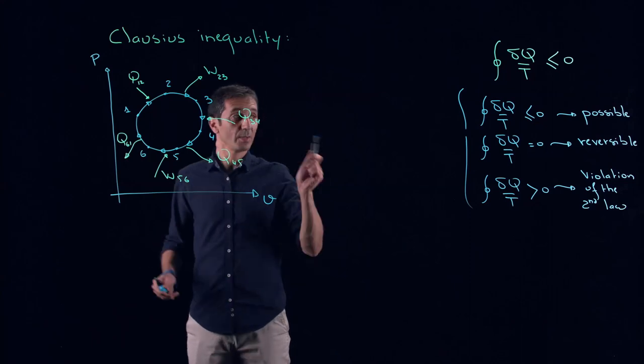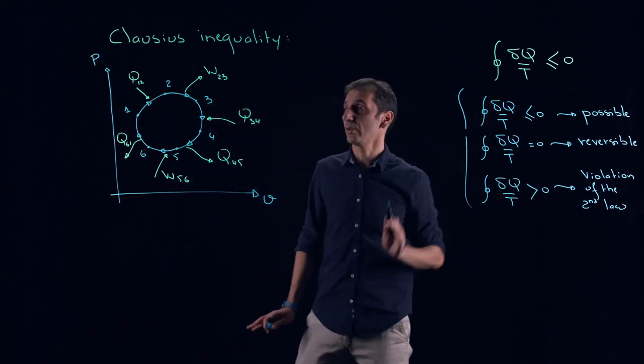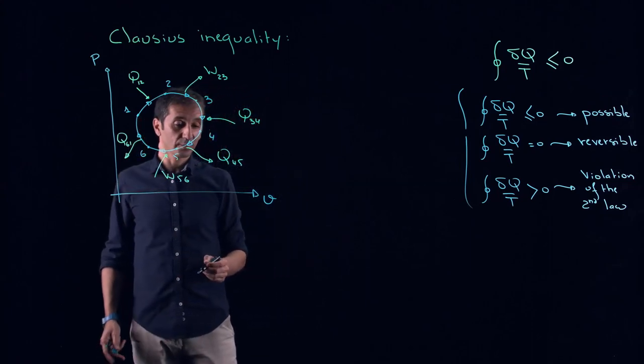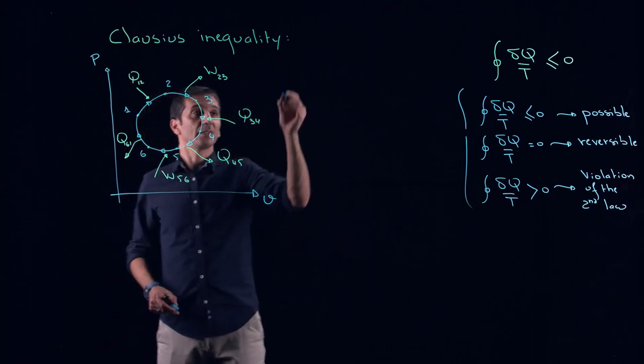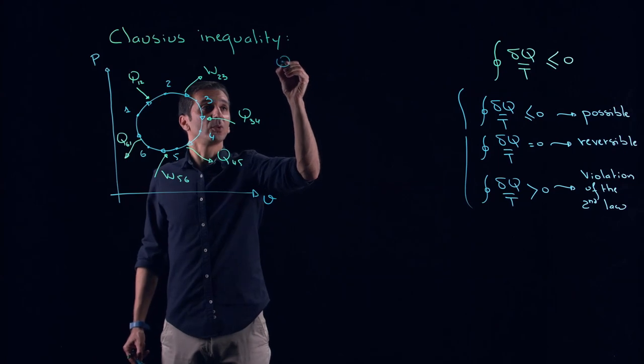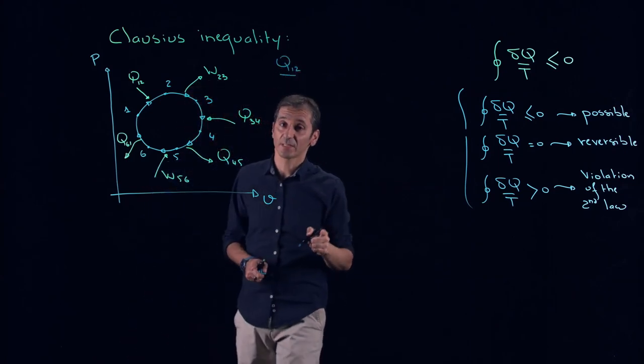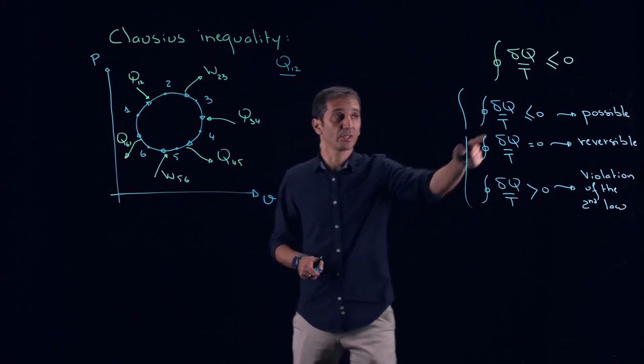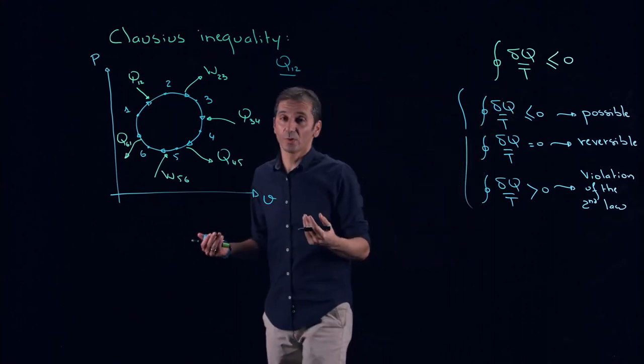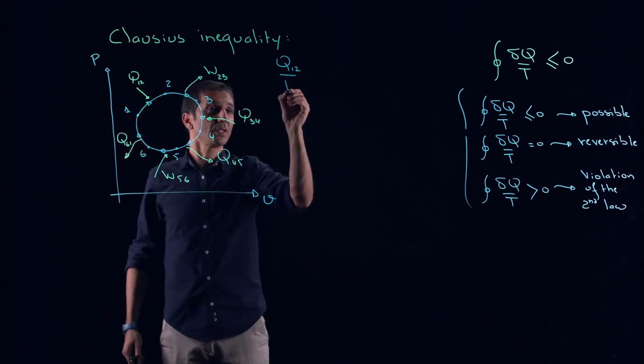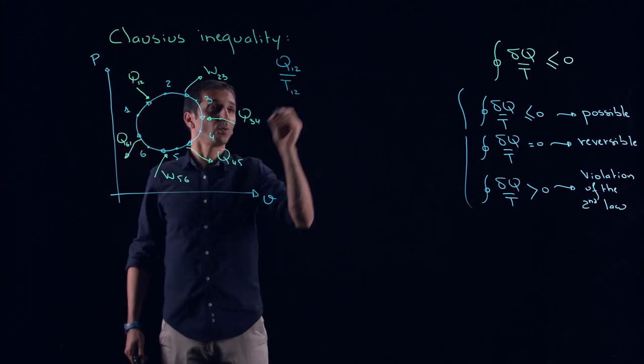Let's do it for this cycle. So what do we have here? Remember, we have just to calculate delta Q over T. That's it. Between 1 and 2, do we have heat involved? Yes, we do. So basically, we can write Q1,2. But it's not just the heat, remember. It's the temperature also. So we have to know from where this heat is coming from. Let's call it temperature of a reservoir 1,2.